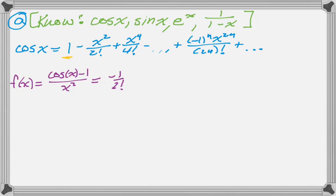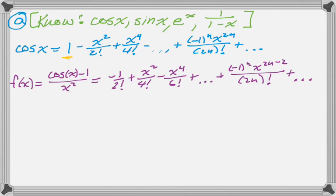So I get negative 1 over 2 factorial is my first term, plus x squared over 4 factorial, and then minus x to the 4th over 6 factorial, and then plus dot dot dot, and then negative 1 to the n, x to the 2n minus 2, over the quantity 2n factorial. All right, so that's part A, and it's really just based on knowing the series for cosine, and then manipulating that series, which is a really common thing for them to ask you to do.